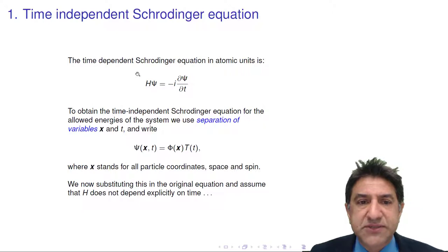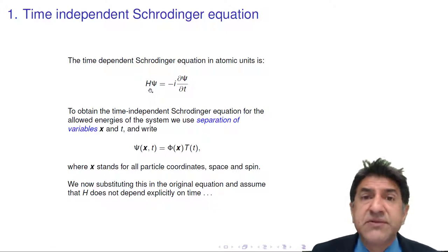Well, we have to start from the time-dependent Schrodinger equation, which looks like this. In atomic units, it's H ψ equals minus i dψ by dt. So this is a first-order differential equation for the wave function in terms of time. And the Hamiltonian here involves the second derivatives with respect to space. So it's a differential equation.